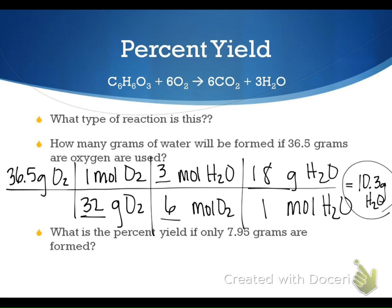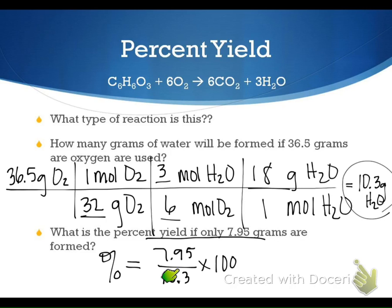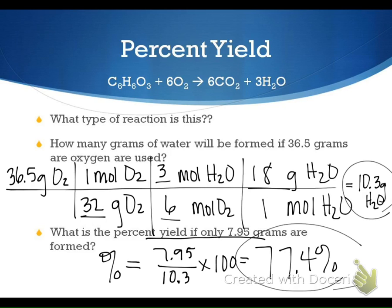This 10.3 grams of water is our theoretical yield because anything that comes out of our T-chart is our theoretical. To find percent yield: if only 7.95 grams were actually formed in the lab, that's your actual yield. So we take 7.95 divided by 10.3, then multiply by 100. That gives us 77.4%. That means somewhere along the way we lost about 23% of our products — it wasn't a perfect reaction.